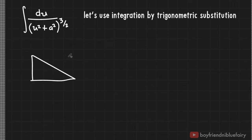First, draw a right triangle and let's assume that the integration variable u is along the vertical side. Now, choosing whether u or a is on the vertical, horizontal, or hypotenuse of the triangle actually depends on the problem.